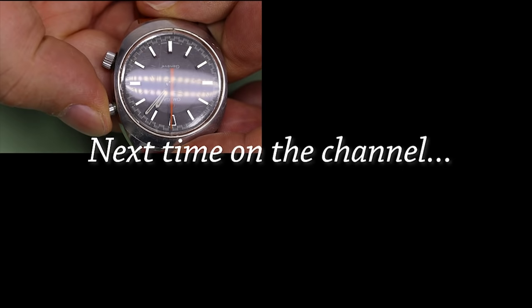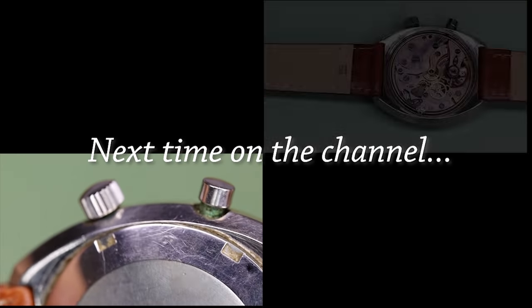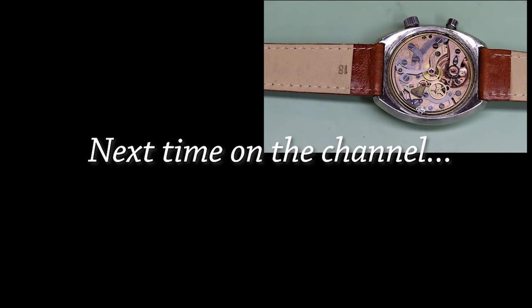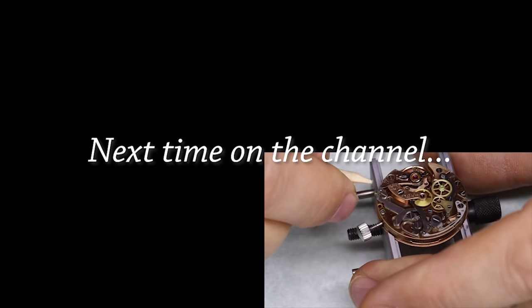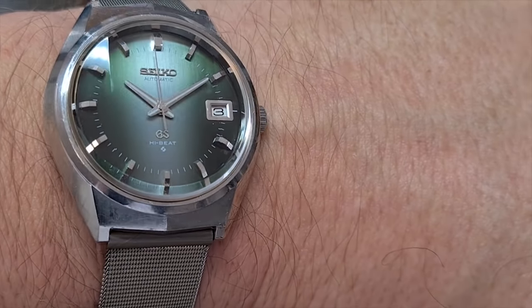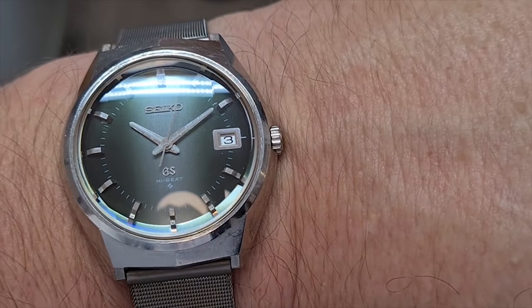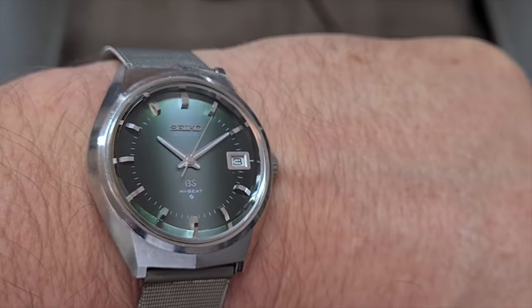But first, a teaser - next time we're going to look at an Omega Chronostop that has a few problems but we'll try to resolve them. And then we can enjoy this beautiful Grand Seiko on the wrist. That is a mighty fine watch, that is something else. A very rare and very beautiful GS61.